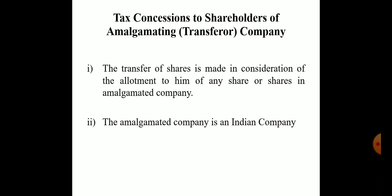Tax concession to the shareholders of the amalgamating company or transferor company: here we apply Section 47 subsection 7 of the Income Tax Act 1961. Where a shareholder of the amalgamating company transfers his shares in a scheme of amalgamation, such transaction will not be regarded as a transfer for capital gain purposes, provided the following conditions are satisfied: the transfer of shares is made in consideration of allotment to him of any share or shares in the amalgamated company, and the amalgamated company is an Indian company.